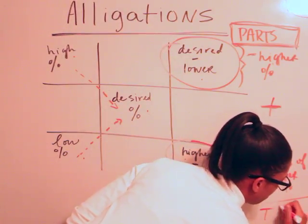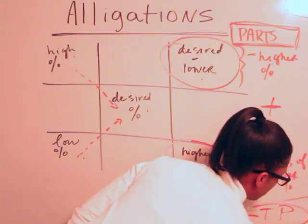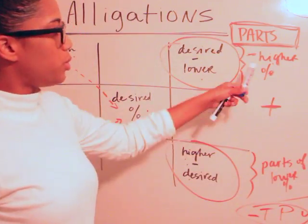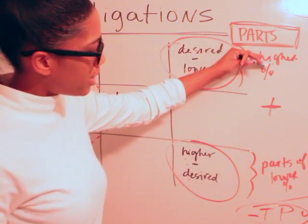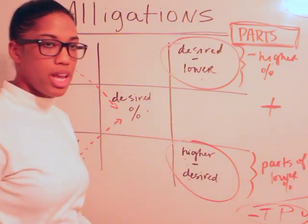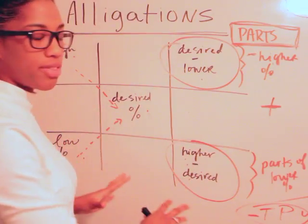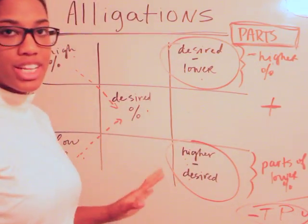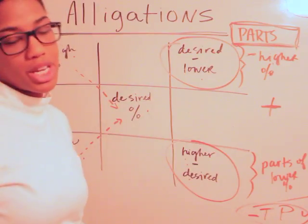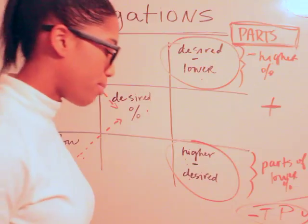I'm just going to put TP here to keep it short, but that'll end you up when you add this plus this, you'll end up with your total parts. That's just a general way of discussing alligations. We're going to go more now into some example problems and it's all going to come together for you.